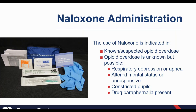Naloxone can be used when opioid overdose is unknown but possible. If you find a patient with respiratory depression, unresponsive or altered, with constricted pupils — and there's drug paraphernalia on scene like a needle still in their leg — there's a high likelihood they abused opioids. You might not know for a fact it was an opiate overdose, but there's high suspicion. A young male slumped over, friends saying he's known to use heroin and they just found him like that — that's when it's indicated.